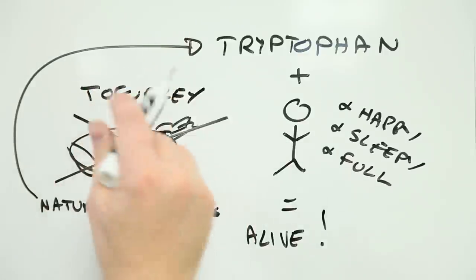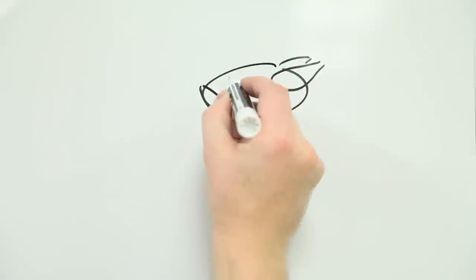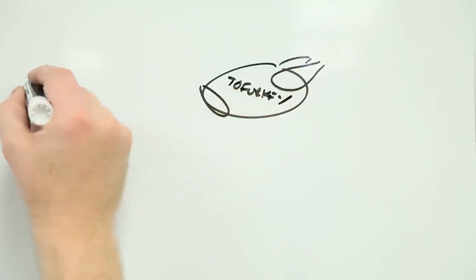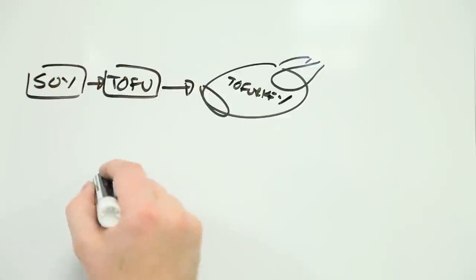But what happens if you eat tofurkey instead? According to the United States Department of Agriculture, tofu, which as you might have guessed is what most tofurkeys are made of, contains less than half the tryptophan in roaster turkey.